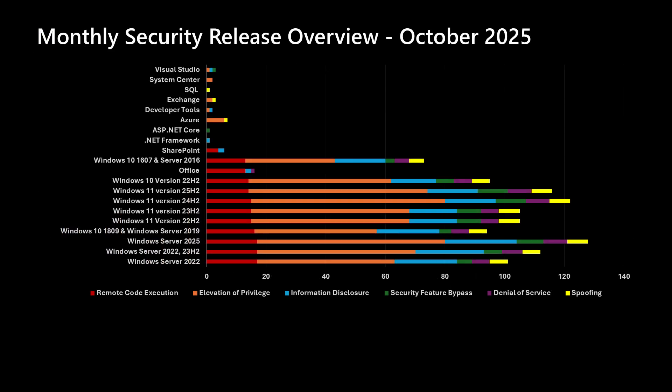Let's dive into the October release. Those of you that have watched this video before will recognize this chart where we put the Windows products towards the bottom, and then move up into products that are not necessarily serviced every single month. With the Windows side, we've been averaging in the upper 50s into the upper 60s depending on the specific operating system, and we're well above that this month. As we move up the chart, we see Office and SharePoint making an appearance as they usually do, but we also have a handful of vulnerabilities in the developer tools section — that's .NET, ASP.NET Core, Visual Studio. Exchange, SQL, and System Center are enterprise tools that have updates available this month. And rounding it all out, there's a handful of vulnerabilities in the larger Azure umbrella that have updates to address vulnerabilities.